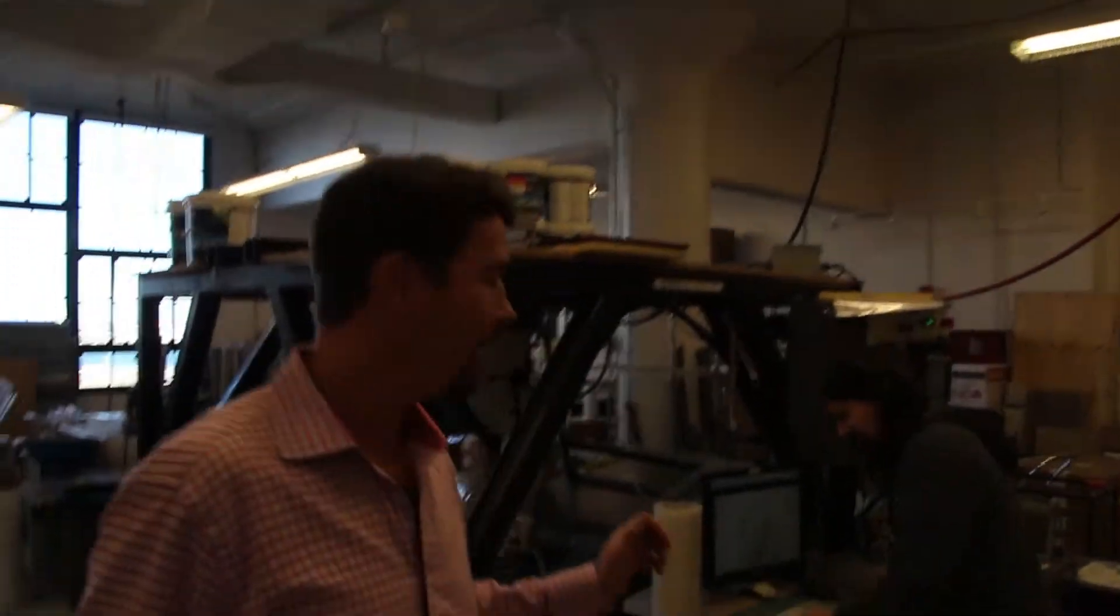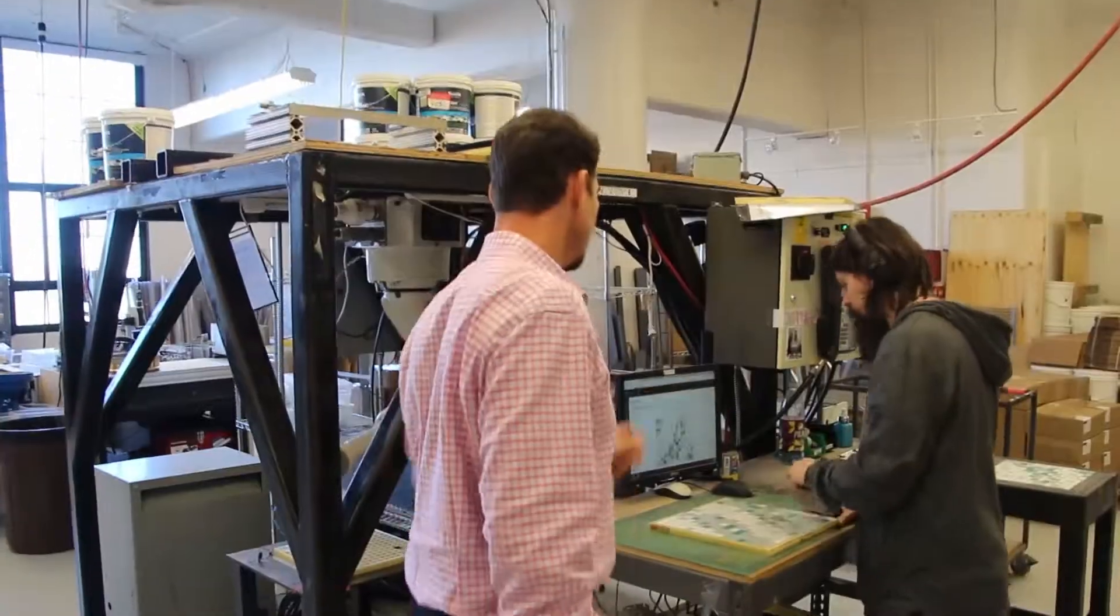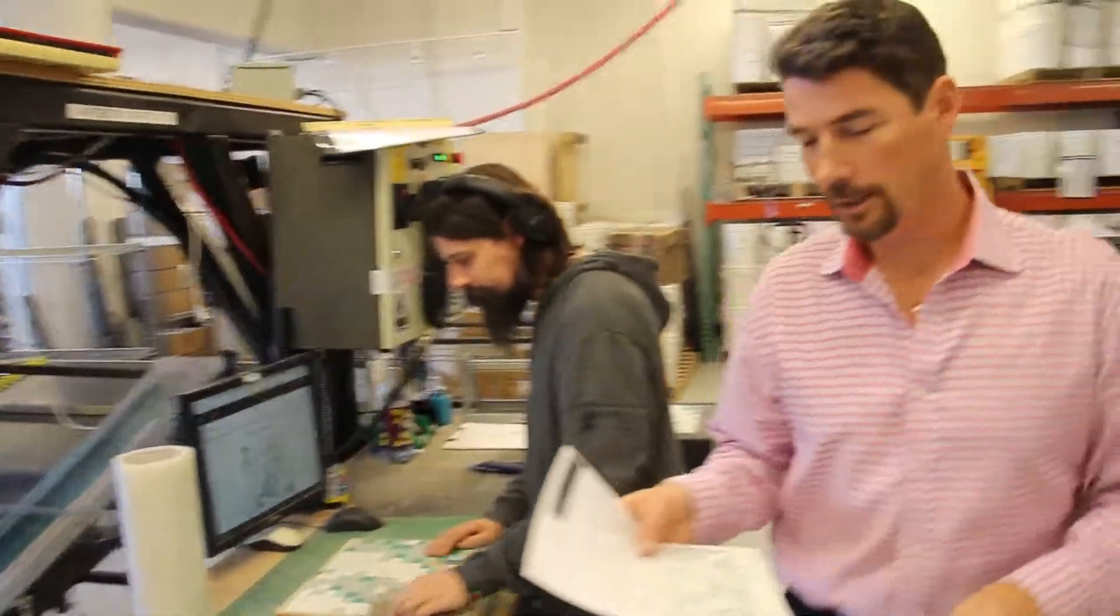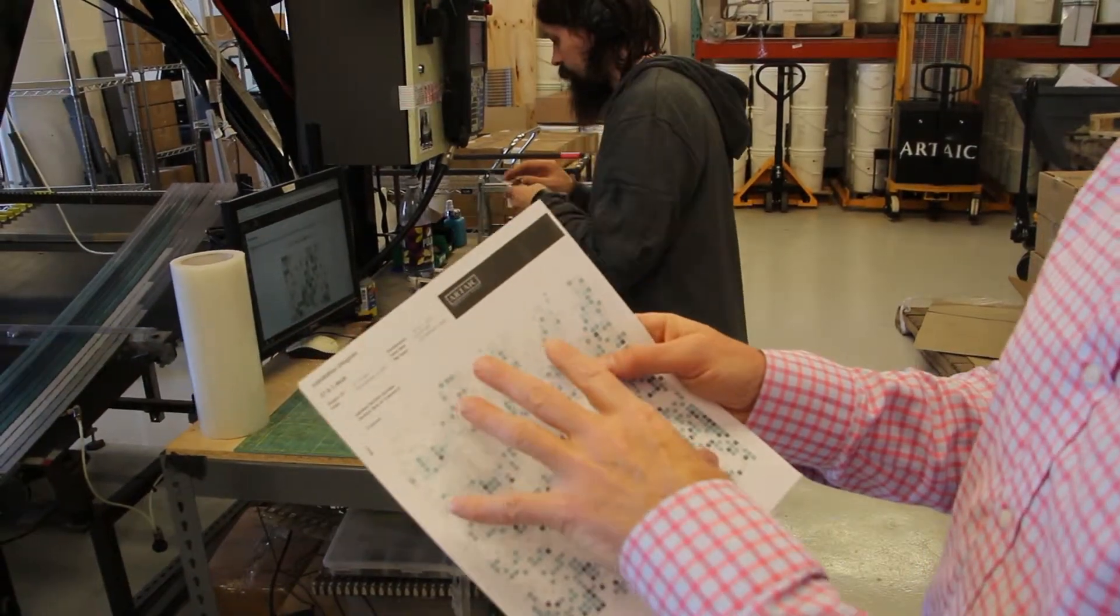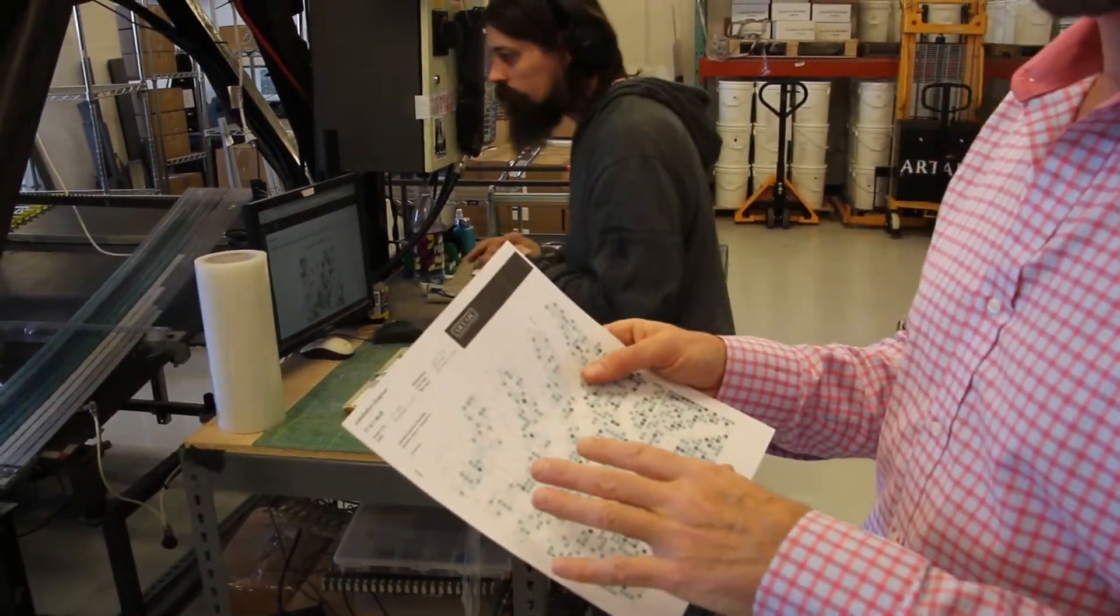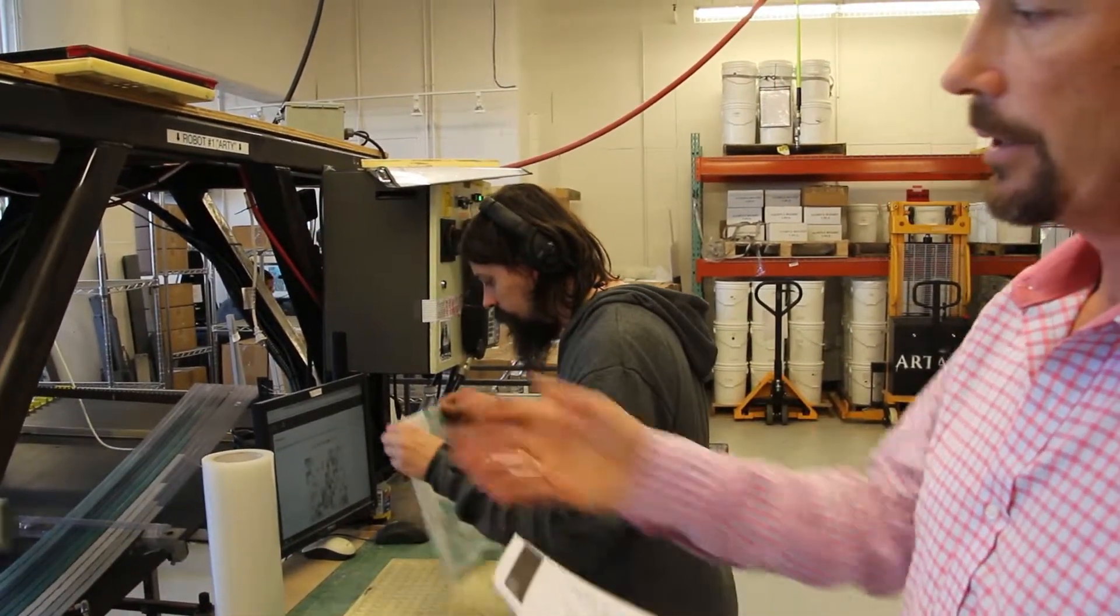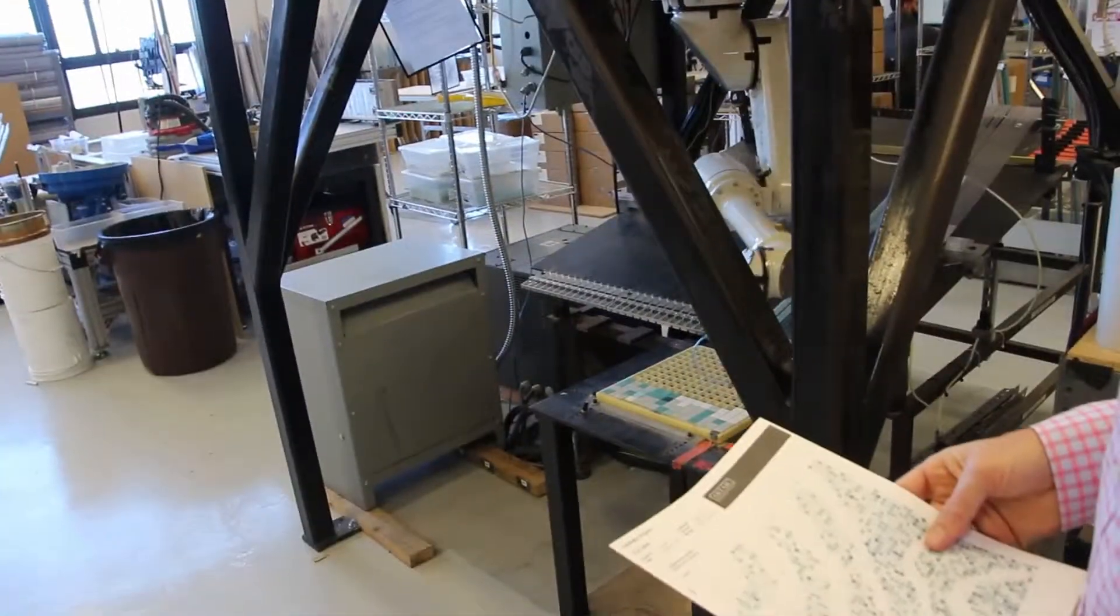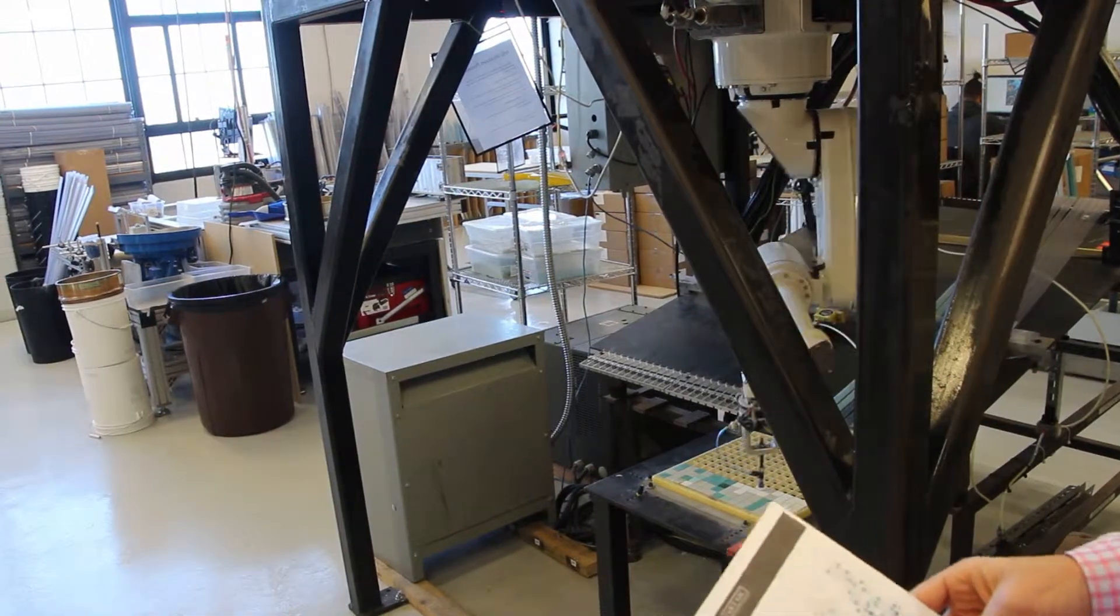So Evan's making a mosaic right now. This is a small project, only about three and a half feet by three and a half feet. This is an installation diagram, again, generated by our computer after the design is done. The mosaic is chopped up into one square foot sections that the robot will assemble. So Evan here is running the robot, cranking out square foot by square foot. And ultimately, each of these sheets will get numbered, quality controlled, packed up and shipped to the work site.